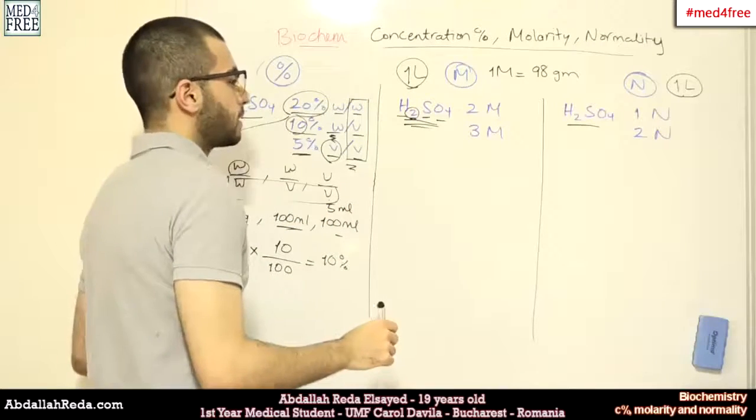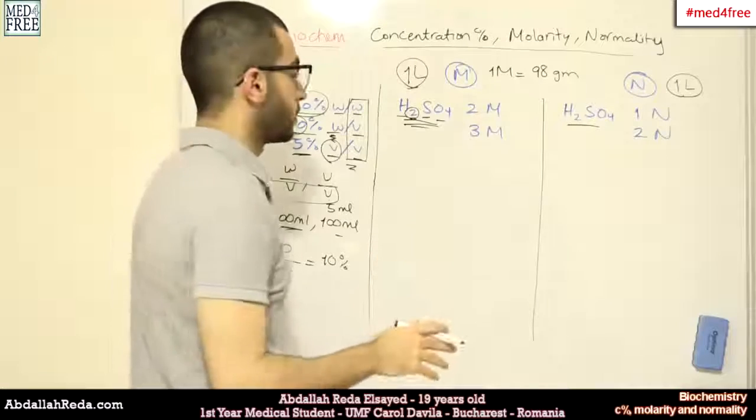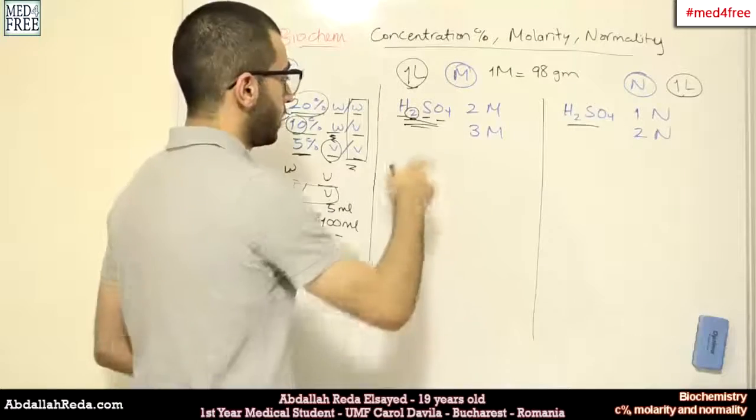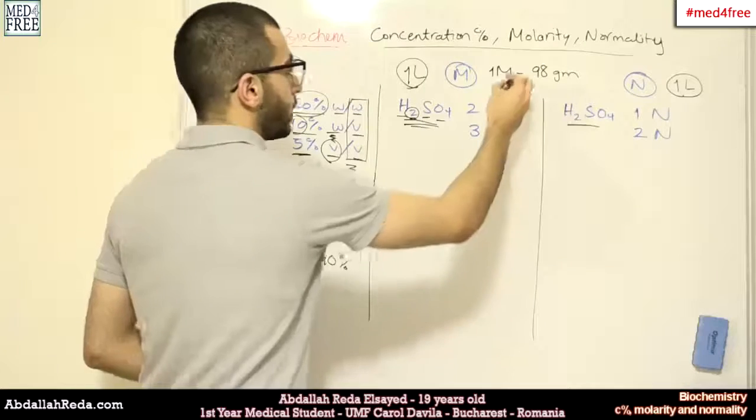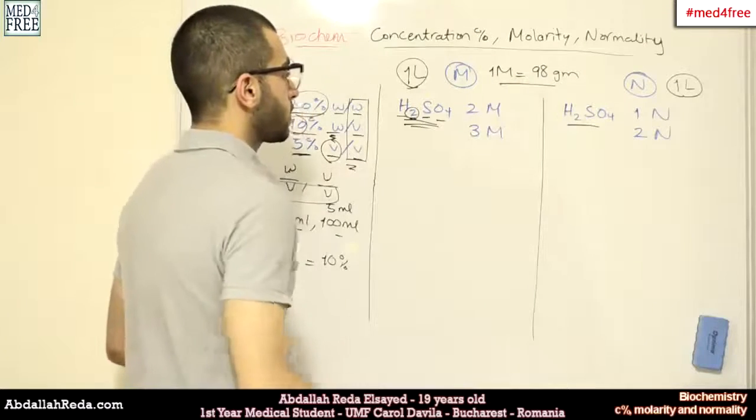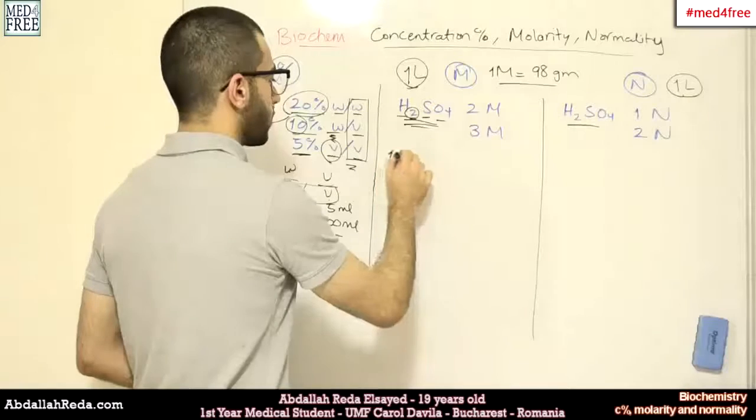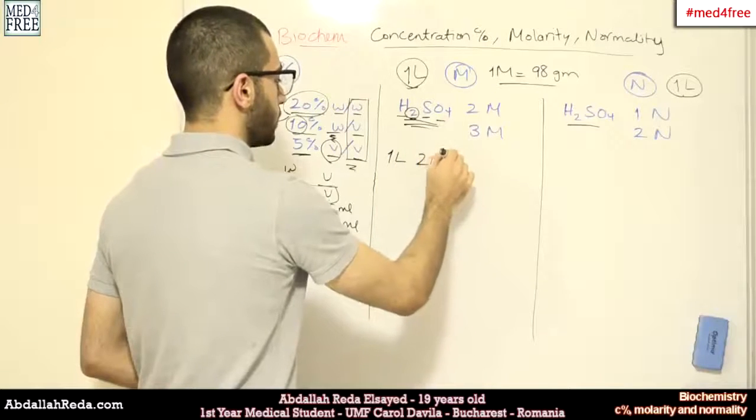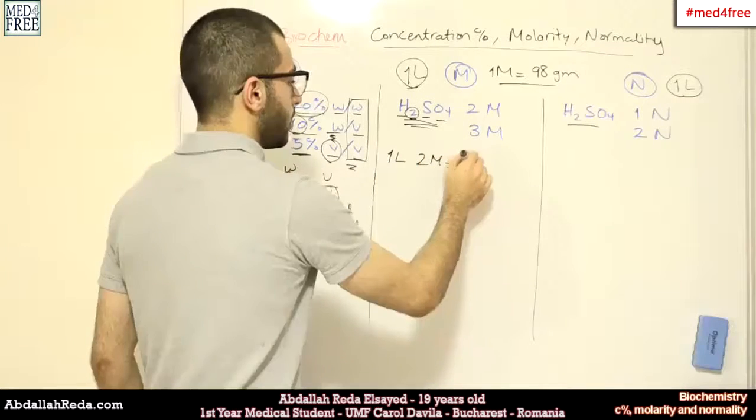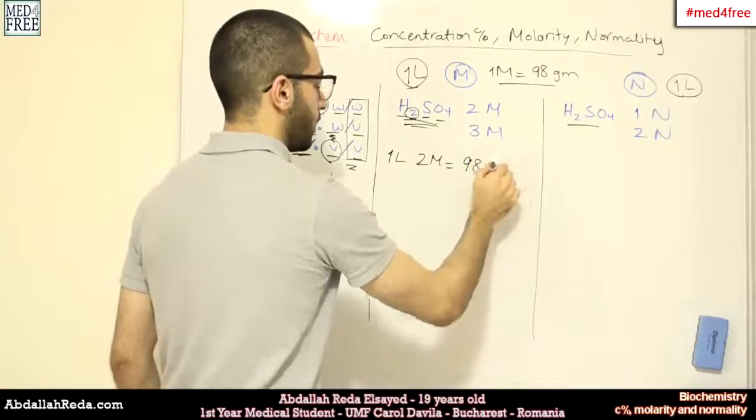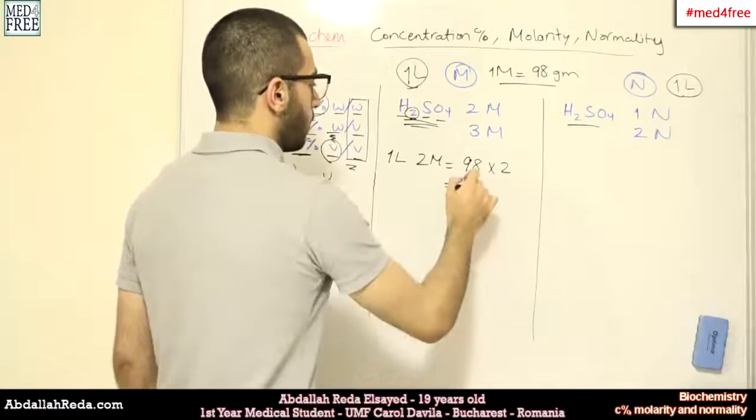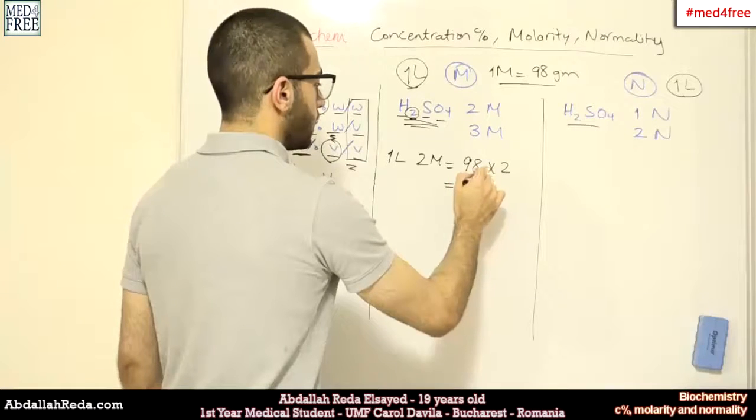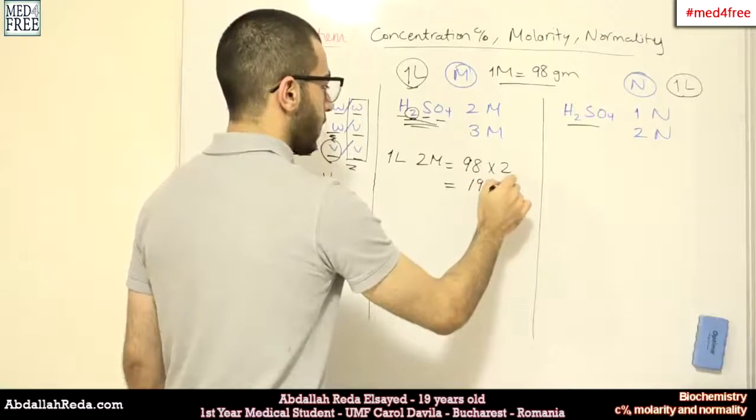So, if I say that I have a solution which is 2 molar and it's a solution of sulfuric acid, this means that we already know that 1 mol is 98 grams. So, this means that 1 liter of the 2 molar solution will actually contain 98 grams multiplied by 2, which is 196 grams.